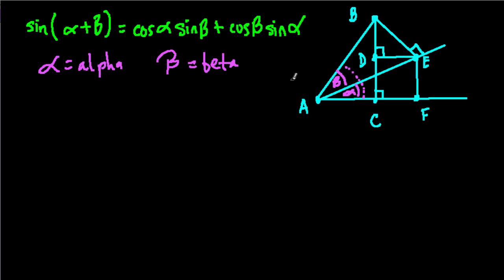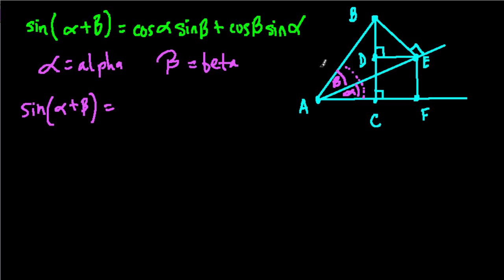That will help us start this off. The sine of alpha plus beta — those two angles together — what's that going to be? The sine function relates the opposite to the hypotenuse. Think of SOHCAHTOA: opposite over hypotenuse. So here's our opposite side BC over the hypotenuse AB.